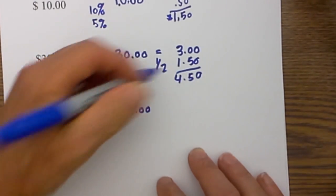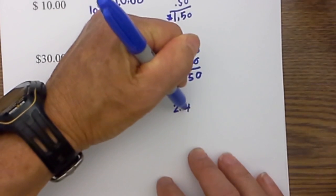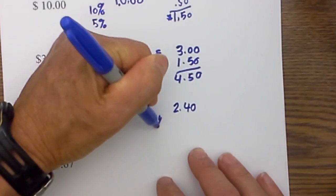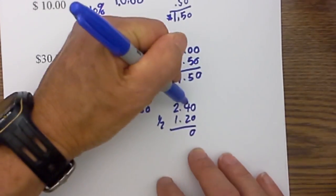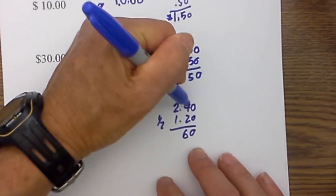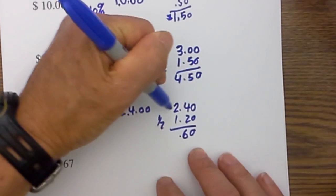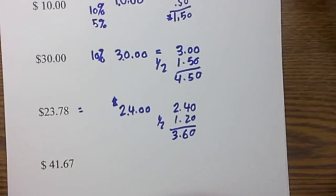I move the decimal one to the left so that becomes $2.40 and take one half of that which is $1.20. So I am going to tip $3.60.